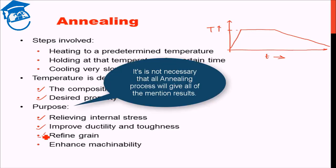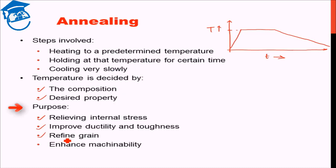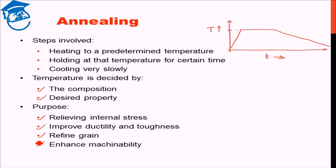It does not mean all annealing processes will give you all of these outcomes. Different annealing processes under different schedules might give a different response altogether. This improved ductility and removal of internal stresses also improves the machinability of the material. So annealing can be used to remove internal stress, improve ductility and toughness, refine grains, and enhance machinability.